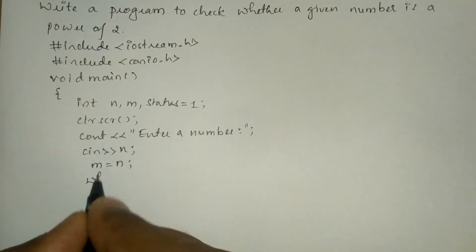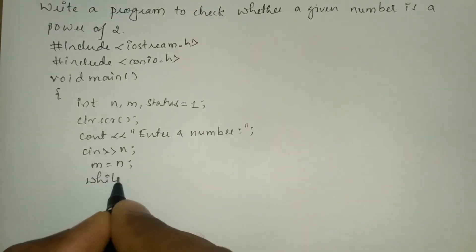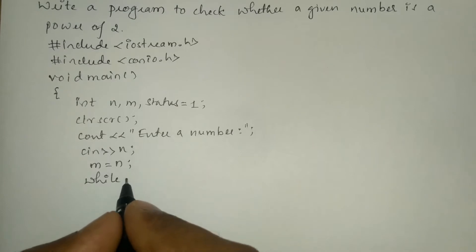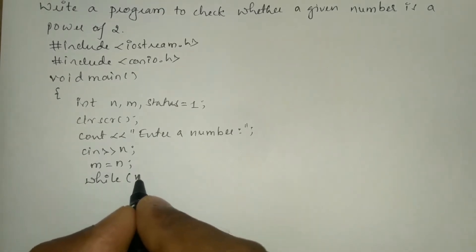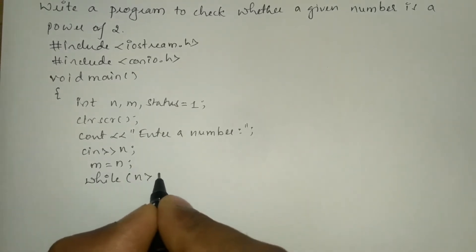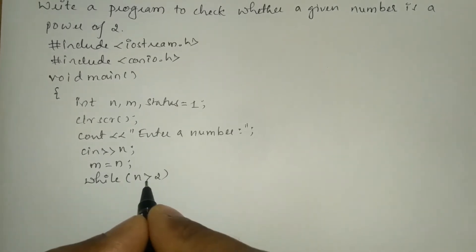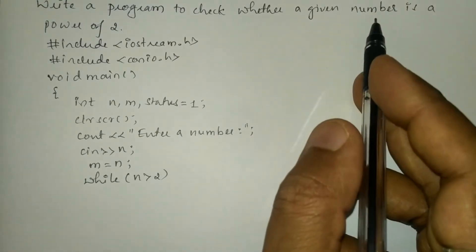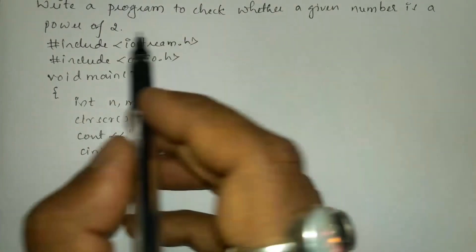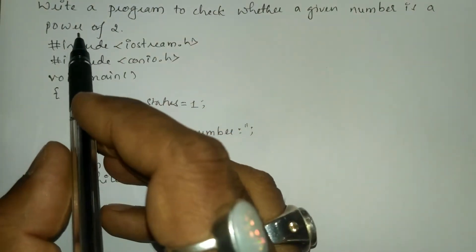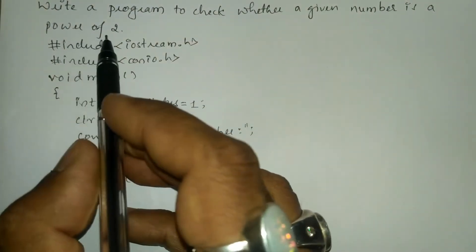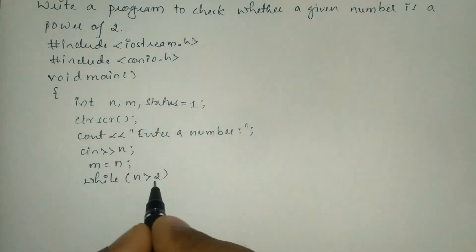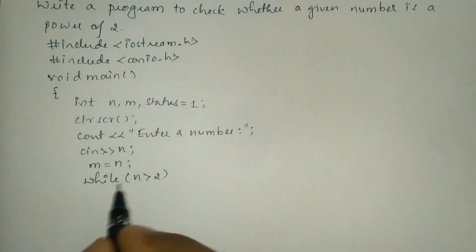Now we will iterate using a while statement: while n is greater than 2. Why n is greater than 2? Because in this question we have to check whether the entered number is a power of 2 or not, hence we write n is greater than 2.